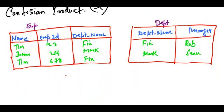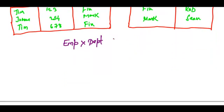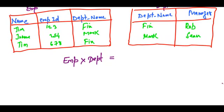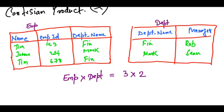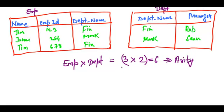In the Department table we have: department name Finance, manager Rob; and department name Marketing, manager Sean. Now, the cross product of Employee and Department basically relates one row in a particular table to all the other rows in the other table. The number of rows in the cross product equals the product of the number of rows in the two tables. The Employee table has three rows and the Department table has two rows.